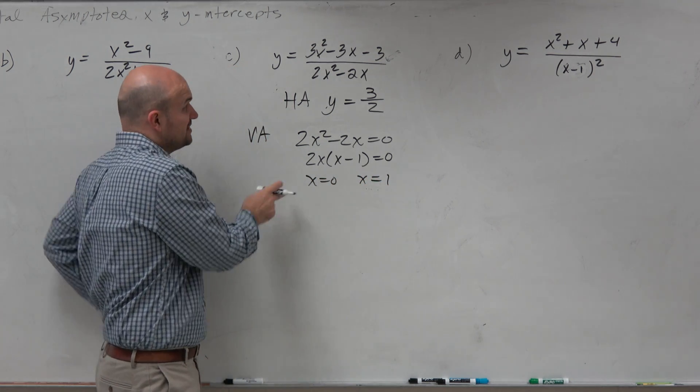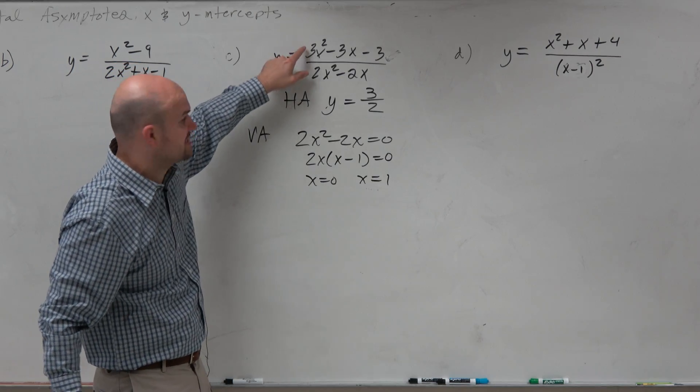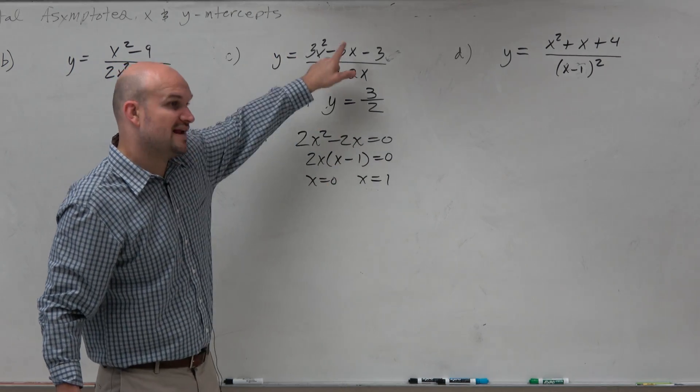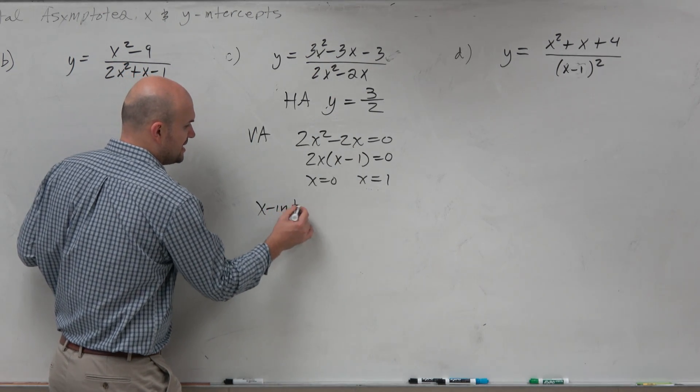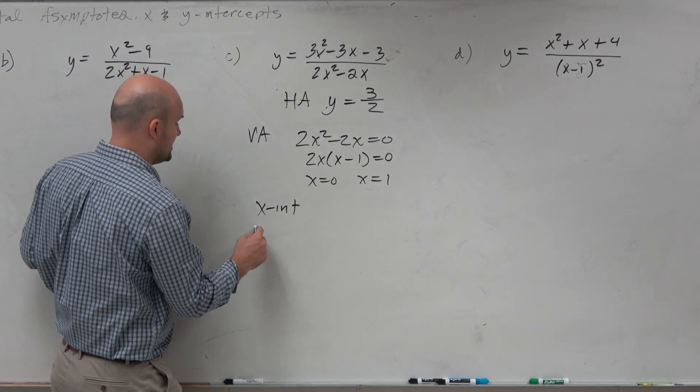OK, but I'm going to verify this because I want to double check that one of these is not a factor of that. So I'm going to do that next when I find the x-intercept, right? Because the x-intercept, you just set the numerator equal to 0.